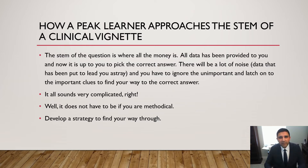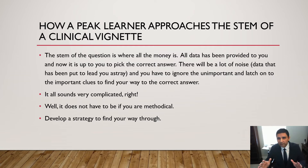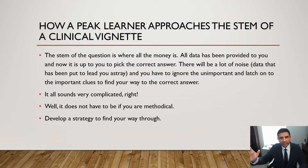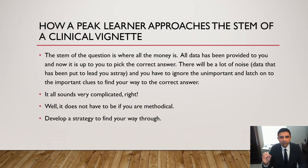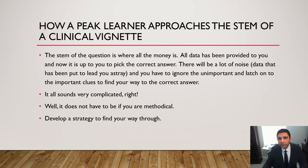If you use my system and methods, which I call the Peak Learning System, you are a peak learner. So how do you approach the stem of a clinical vignette? The stem of the question is where all the money is — all data has been provided to you, and now it's up to you to pick the correct answer. There's going to be a lot of noise — data they have put in there to lead you astray, to make you go in the wrong direction and get a wrong answer. We don't like noise. We have to clear out the noise. You have to ignore the unimportant and latch on to the important clues to find your way to the correct answer. It doesn't have to be complicated if you are methodical — you have to have a method and develop a strategy to find your way through.